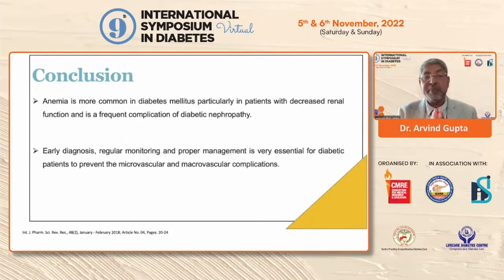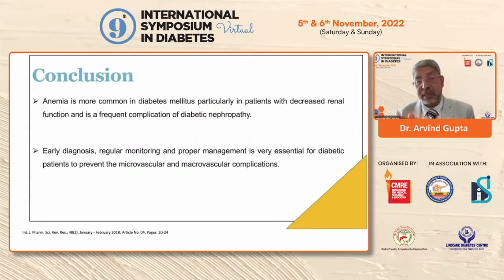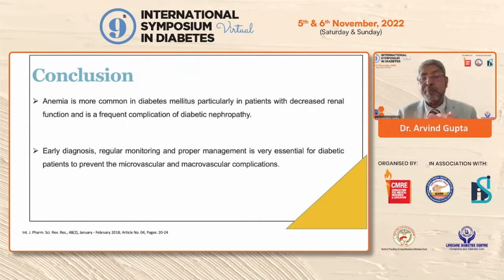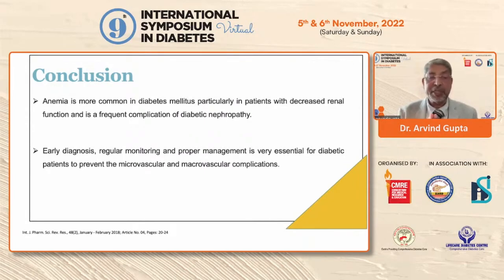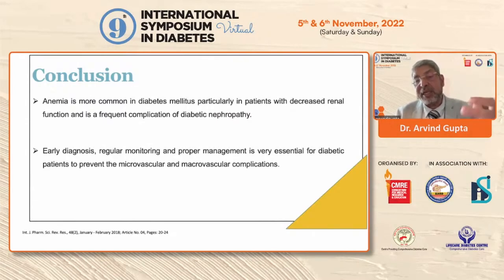To conclude: anemia is very common in diabetes patients, especially in the Indian population. On an almost daily basis we see hemoglobin of not more than 10 or 11 gram percent, not only in males but very commonly in females, with decreased renal functions and frequent complications of diabetic neuropathy. Early diagnosis is the key, regular monitoring is required, and proper management with iron replacement and, if needed, erythropoietin therapy is very essential to prevent micro and macrovascular complications, improve quality of life, and reduce heart failure risk.